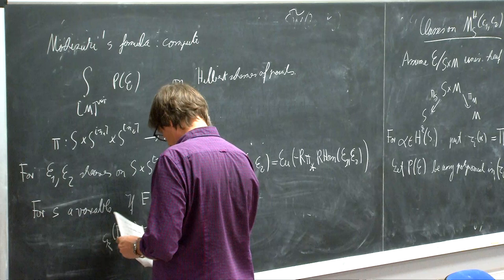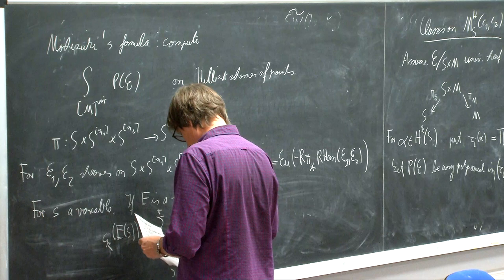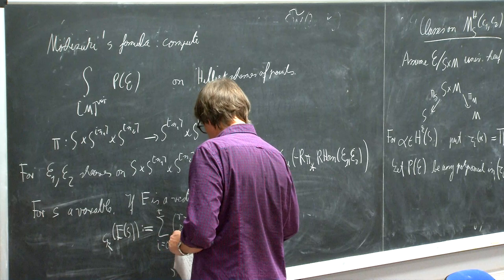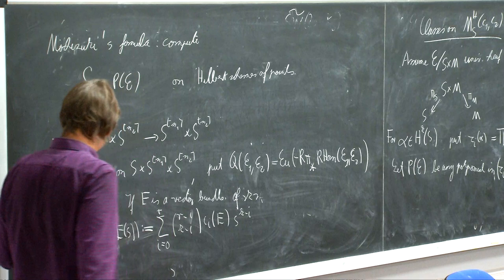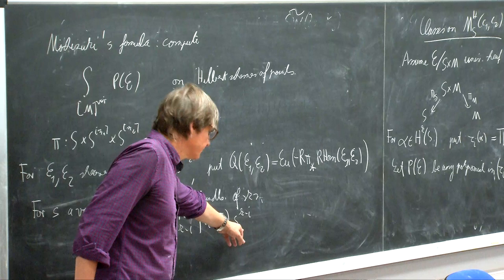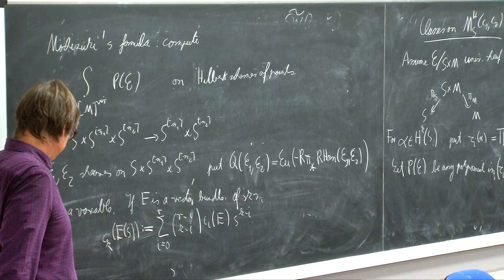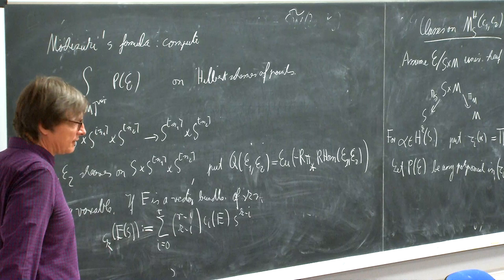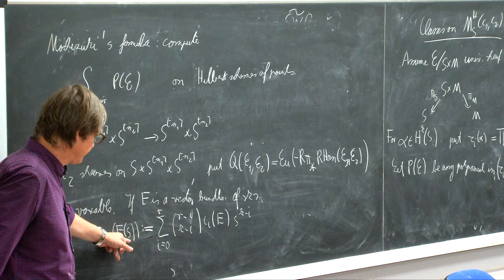So Mochizuki's formula computes this virtual intersection number for any such polynomial, in terms of intersection numbers on Hilbert schemes of points. The formula is a little bit complicated. We have four line bundles A1, A2 on S. We can write psi of A1, A2, N1, N2, S to be some Chern expression. Recall that we had this P(E) that we wanted to compute — the integral over M of P(E).